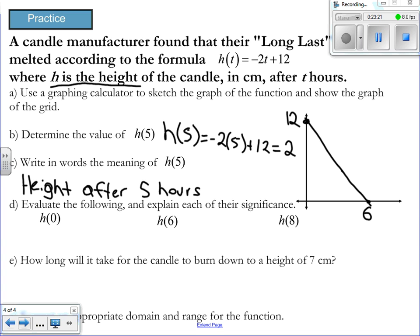Evaluate the following and explain each of their significance. H of 0 would be equal to what? And what's its significance? It's equal to 12. And what's the significance of that? It's the y-intercept. And what is that in context of the question? Yeah, it's the height of the candle when you bought it. That's the significance. It's the starting height of the candle. H of 6, what's that equal to? It's 0. What's the significance of that? It's when it'll burn out. Correct, Emily.